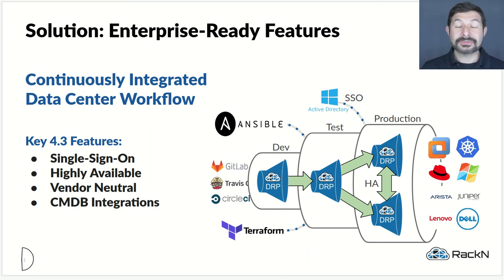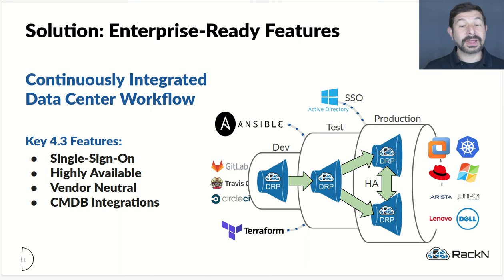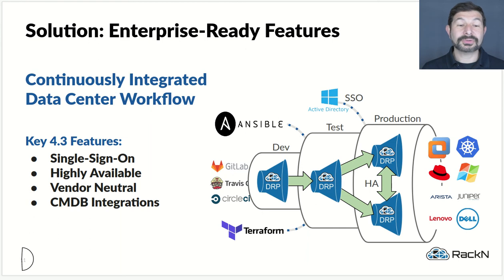Also added in 4.3 is improved HA capabilities, where Digital Rebar can create high availability configurations directly between two different endpoints, allowing the system to be brought up in an HA configuration with minimal external configuration required. All of these things are very important to building robust infrastructure.